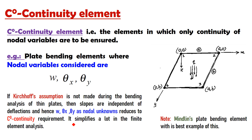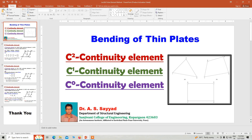These C0 continuity elements simplify the finite element analysis, which is more complex in the case of C1 and C2 continuity elements. Compared to first order and second order continuity elements, the C0 continuity element is more simple for finite element analysis. So these are the three elements used in the bending of thin plates: C0 continuity element, C1 continuity element and C2 continuity element. I hope all of you have understood the different types of continuity elements used in the bending of thin plates.